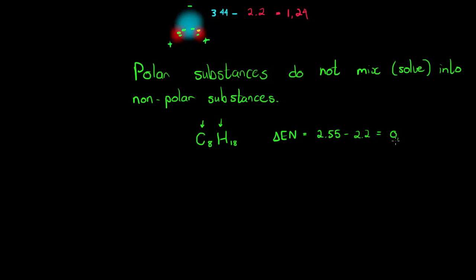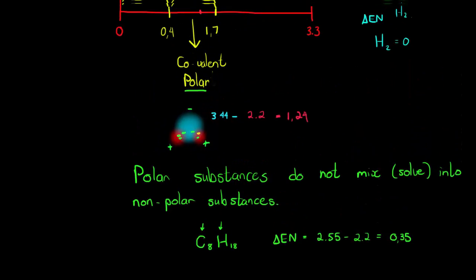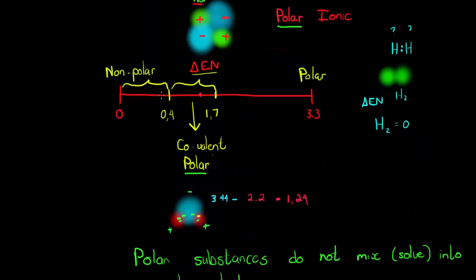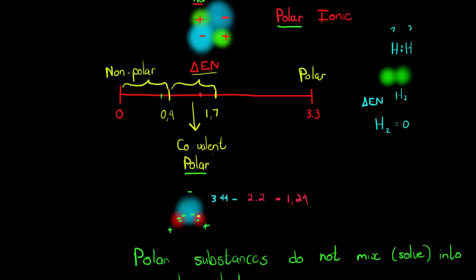So the difference in electronegativity is 2.55 minus 2.2, giving me 0.35. And if we see where that fits in, it's round about here, and so now you can see that this is a nonpolar covalent bond.